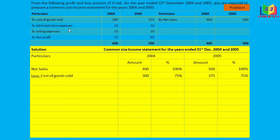Next we calculate gross profit. For 2004: 400 minus 300 equals 100, and 100 divided by 400 gives 25%. For 2005: gross profit is 125, and 125 divided by 500 also gives 25%.